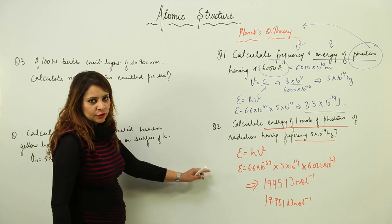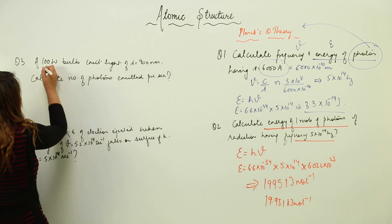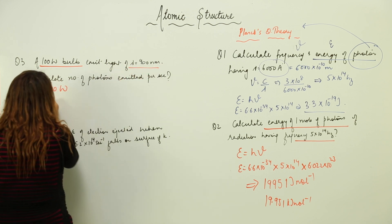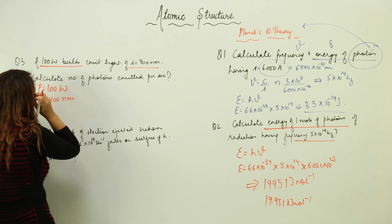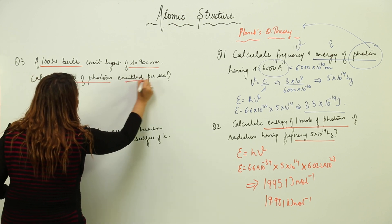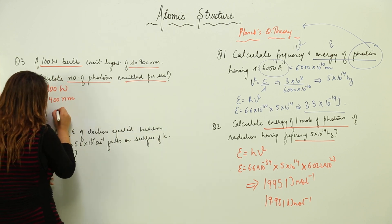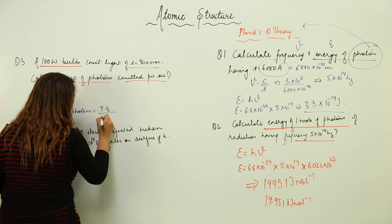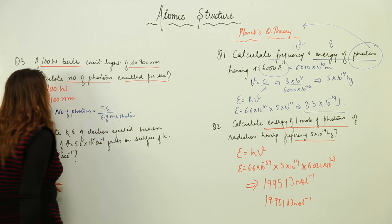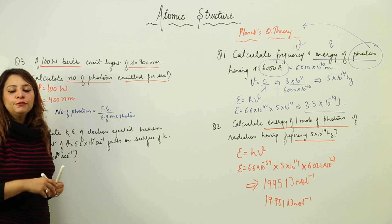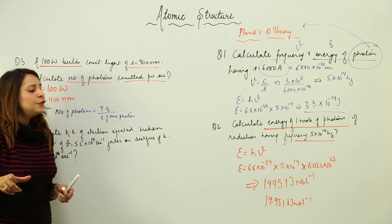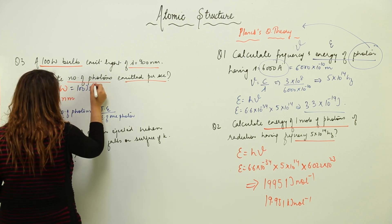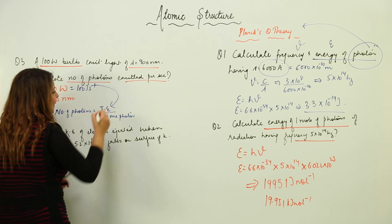The third problem: a 100-watt bulb emits light of wavelength 400 nanometers. We need to find the number of photons emitted per second. The formula is: number of photons = total energy / energy of one photon. Since power is 100 watts, total energy is 100 joules per second.